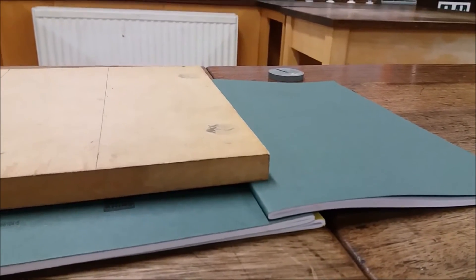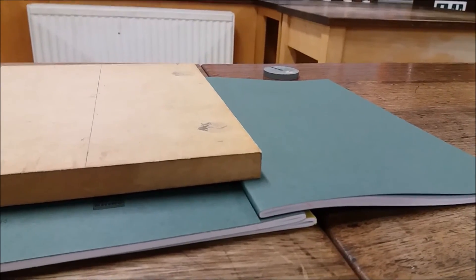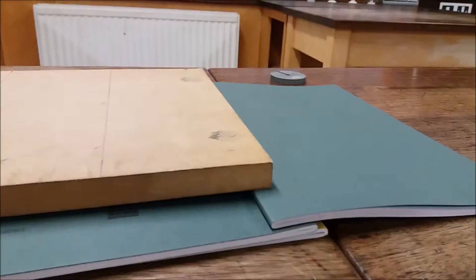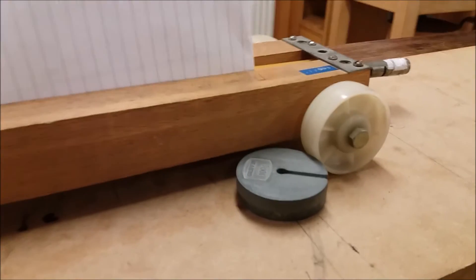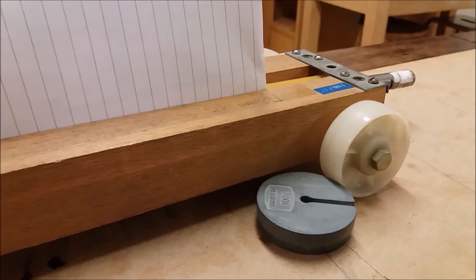We've propped up the ramp a little bit so that the trolley just about moves by itself. Since the friction of the wheels is acting against the pulling force, we do this to create the illusion that there's no friction.